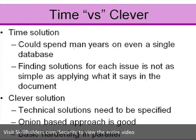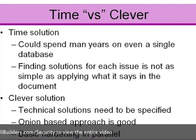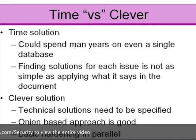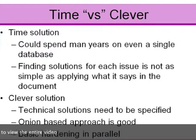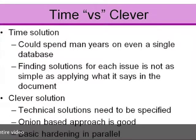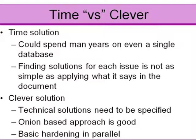We need to put wrappers around the data. We need to have an onion-based approach — we need to put security around the data at its source, we need to put security around access to the database in terms of people being able to connect, and we need to understand who is connecting and what they're doing.